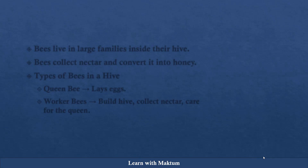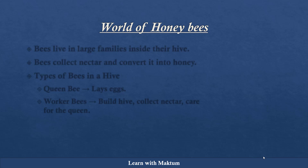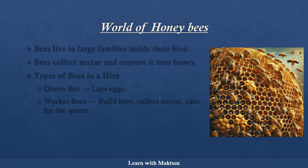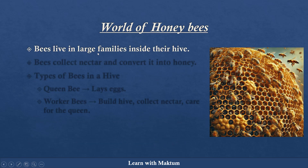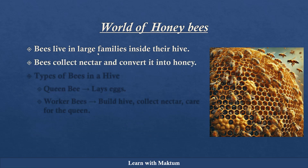Now, one of the group living animals is bees. Since the lesson name is Honey Sweet Honey, we are going to see more about honey bees. Bees live in this large structure, we call it a hive. So bees live in large families inside their hive. Now bees collect nectar — that is something which they get from the flower — and that nectar they convert into honey.